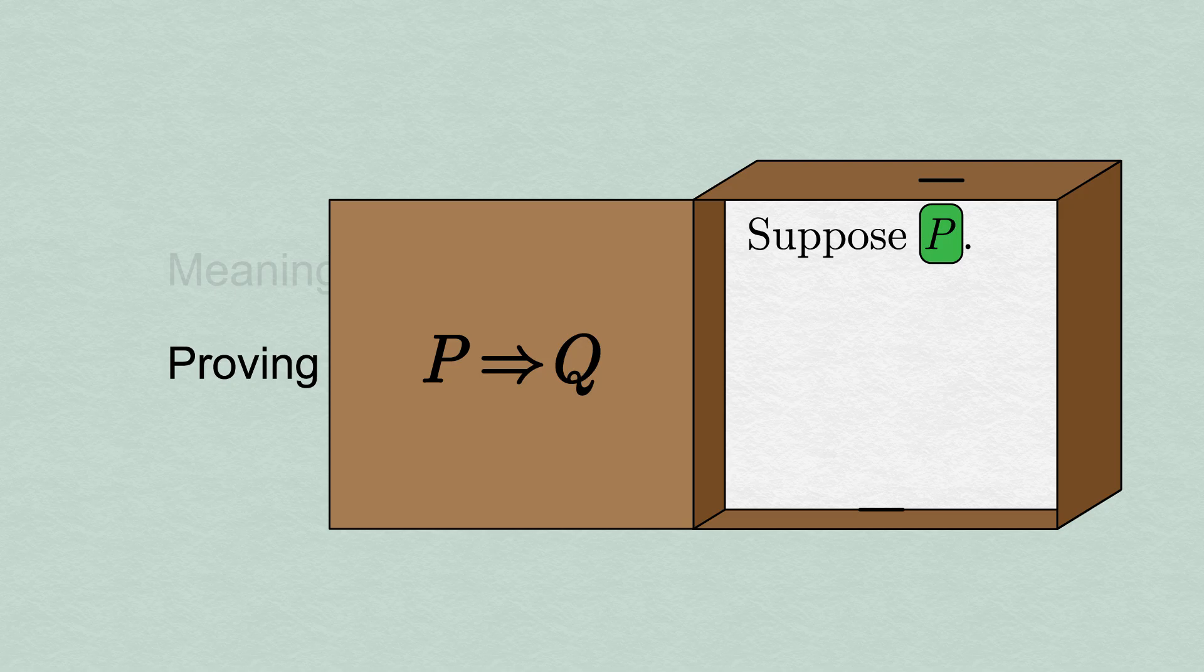This first line is important, as we presumably will need to use the fact that P is true in order to prove that Q is true. This might feel very similar to how we prove the for all statement. The only difference is that instead of letting a value x be given, we suppose that the statement P is true as our starting point.